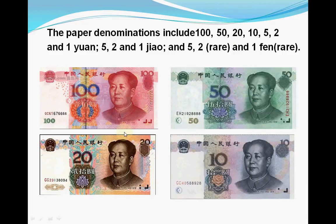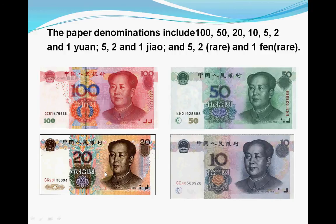Let's see this money. This is 100 yuan — you can say yì bǎi yuán or yì bǎi kuài. This is 50 yuan — you can say wǔ shí yuán or wǔ shí kuài. This is the 20 yuan. This is the 10 yuan — you can say shí yuán or shí kuài.